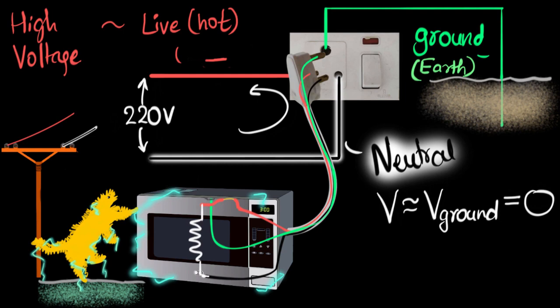So how does that help? Well, now instead of the electricity flowing through the cat, that electricity will flow through this ground wire and go directly into the earth.